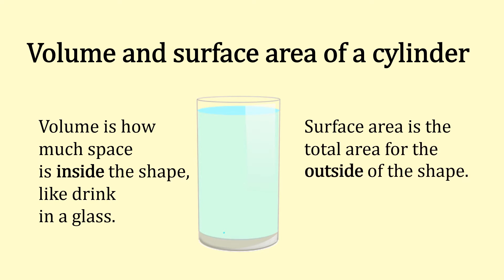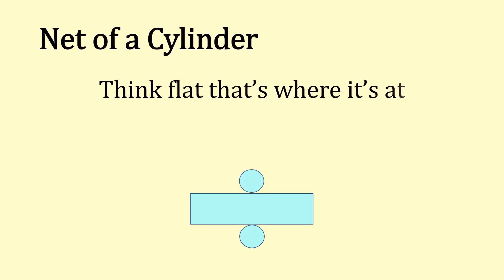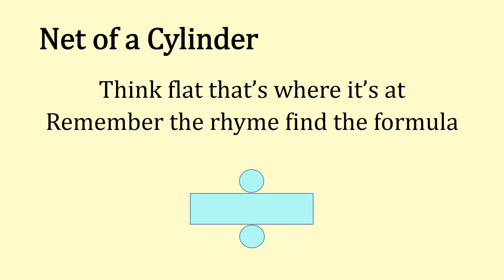And surface area is the total area for the outside of the shape. Net of a cylinder: think flat, that's where it's at. Remember the rhyme, find the formula. The easiest way to work out the cylinder is to make it into its net.